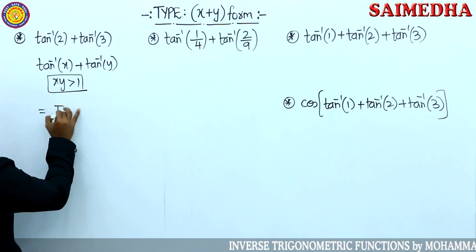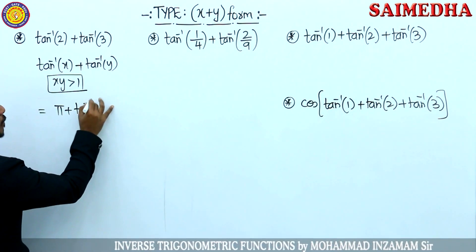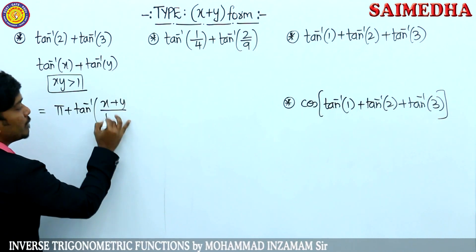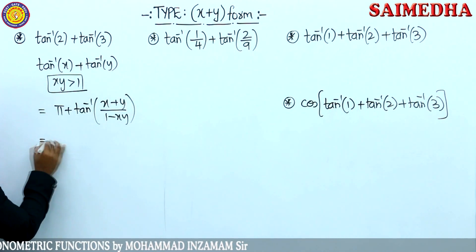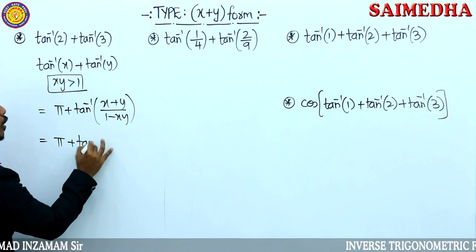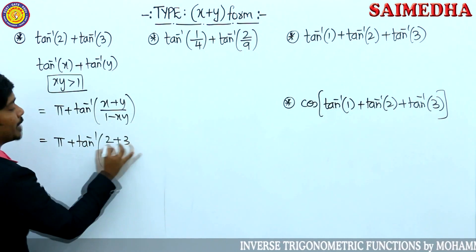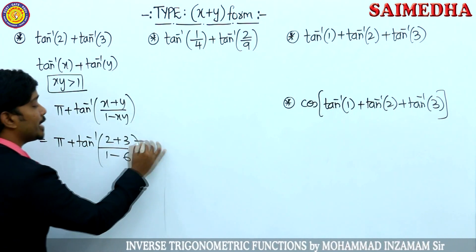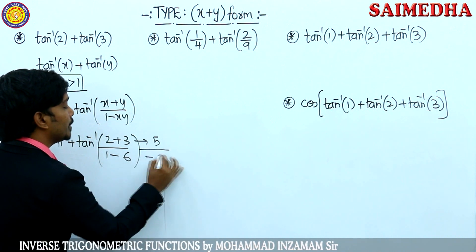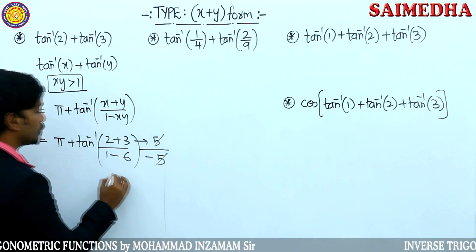If the multiple of xy is greater than 1, then the formula is you need to add pi, pi plus tan inverse of x plus y by 1 minus xy. So substitute pi plus tan inverse of 2 plus 3 by 1 minus, 2 plus 3 is 5, 1 minus minus 5, 5 gets cancelled, minus 1.